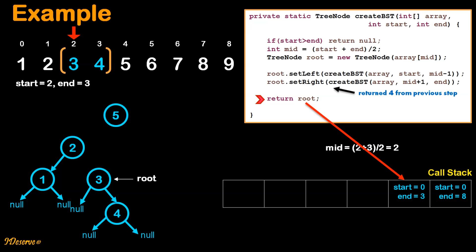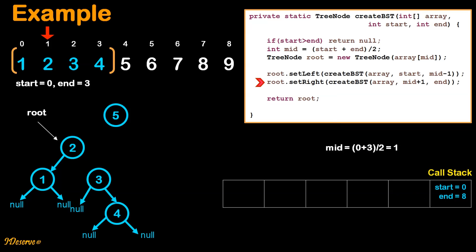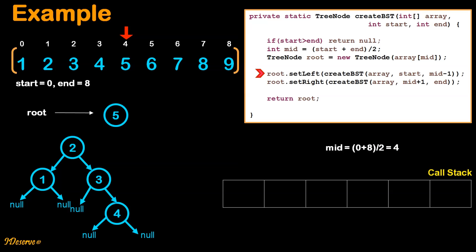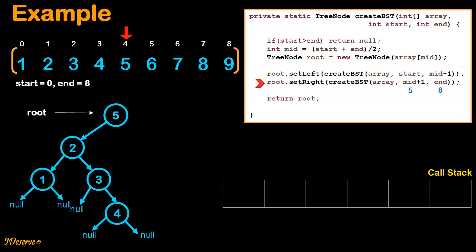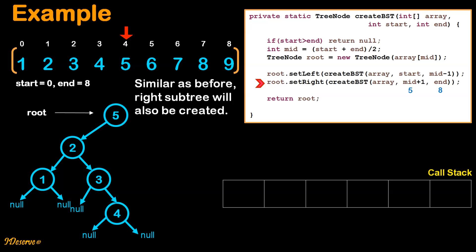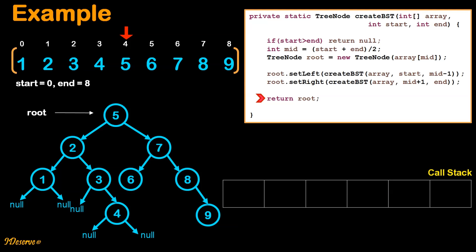We go back to the call stack where start index was 0 and end was 8. Since node 2 was returned, we set 5.left to 2, and the creation of the left subtree of the root is complete. We then call the function recursively for the right sub-array with start index 5 and end index 8. Similarly, the right subtree gets created. Finally, we return 5 as the root of the balanced binary search tree.